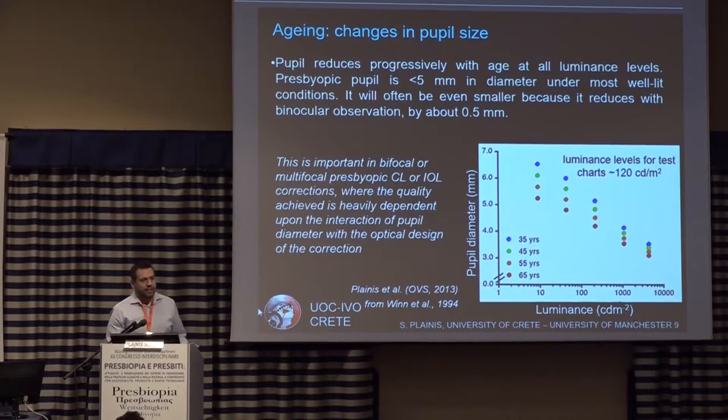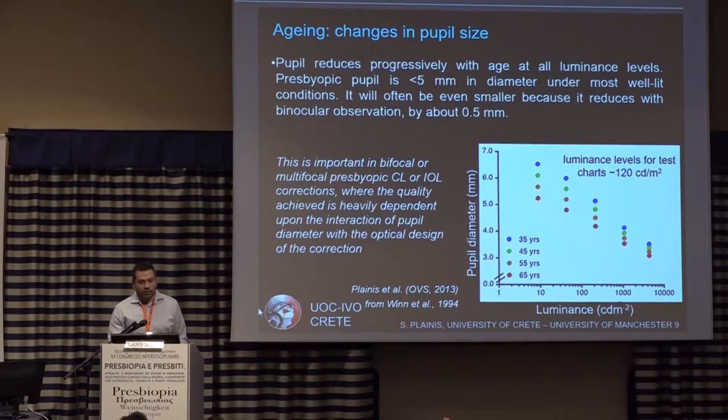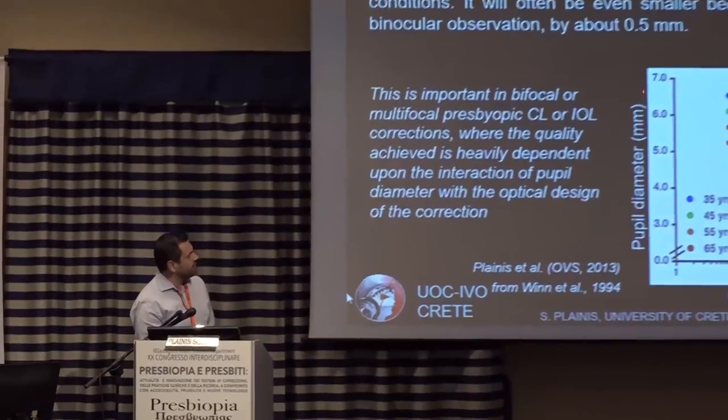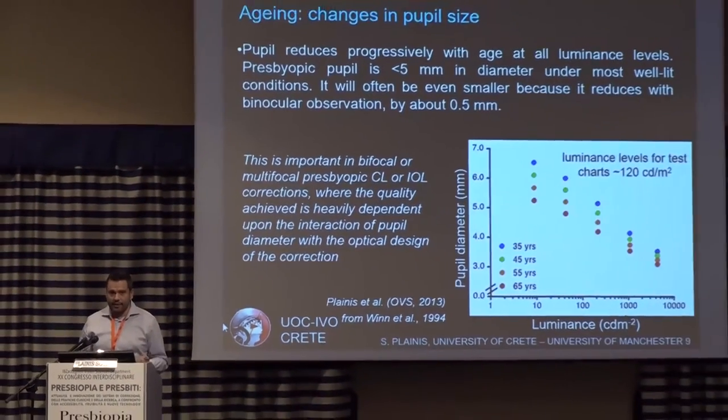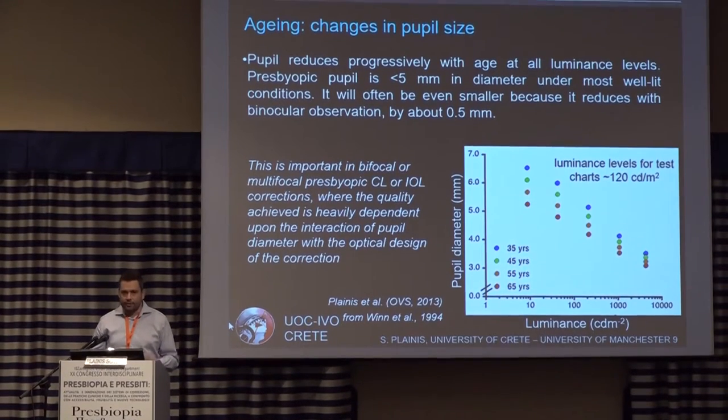One of the important changes that happen with aging is pupil size — not only because of accommodation, but simply because we are getting older. This graph shows how pupil diameter changes as a function of luminance for four different age groups: 35, 45, 55, and 65. We can see the effect of aging: as we become older, the pupil becomes smaller by about 1.5 millimeters in the dark and about one millimeter in bright light conditions. These measurements are usually done monocularly, and with two eyes we have more light entering and pupils tend to decrease by about another half millimeter.